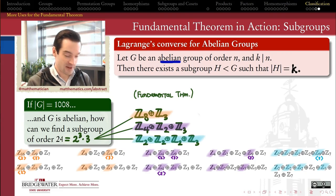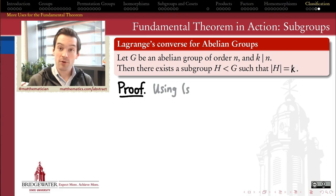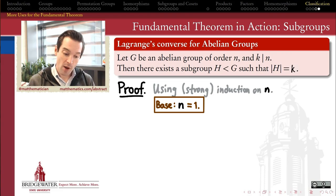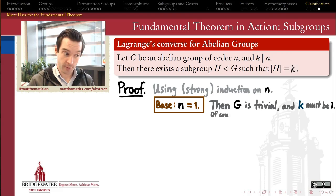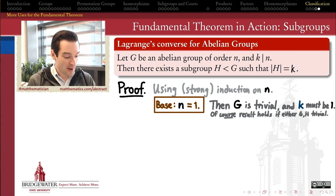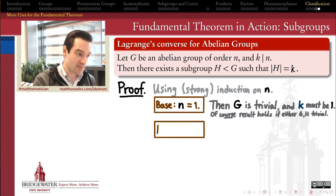Why should we expect this to be true in general? Why is the converse of Lagrange's theorem true for all abelian groups? Let's furnish a proof using the strong form of mathematical induction, building up the converse from smaller order groups to larger ones. The base case is where my group has order one — the trivial group. For a trivial group, Lagrange's theorem works both ways trivially, and if my divisor k is one, the trivial subgroup always exists as a subgroup of any group.